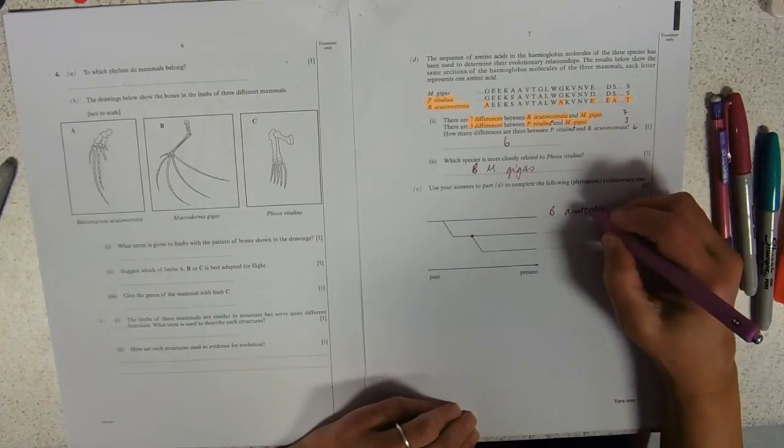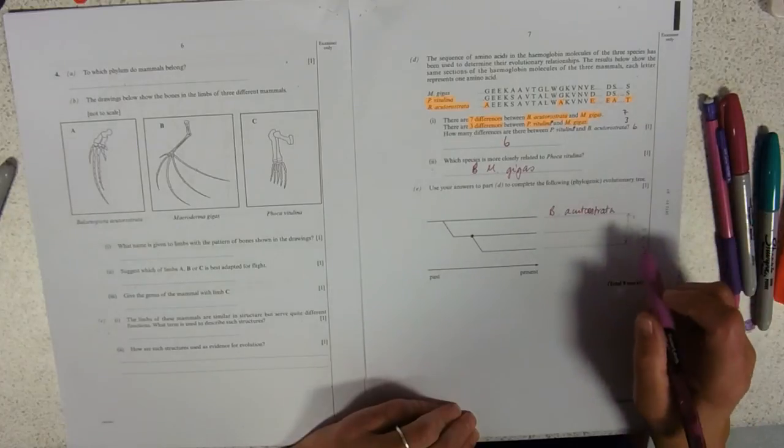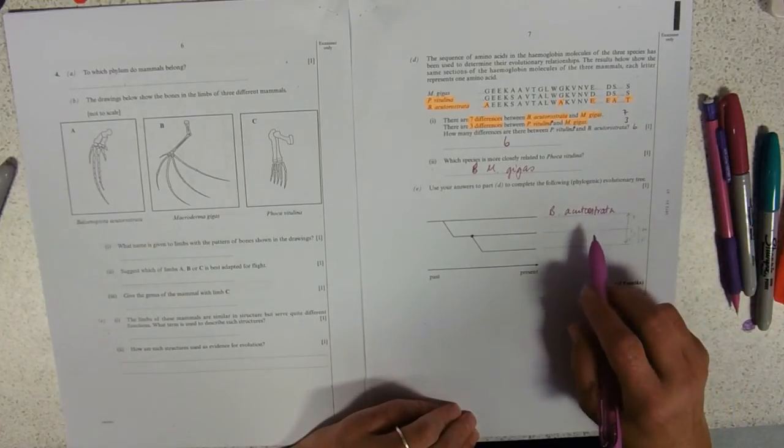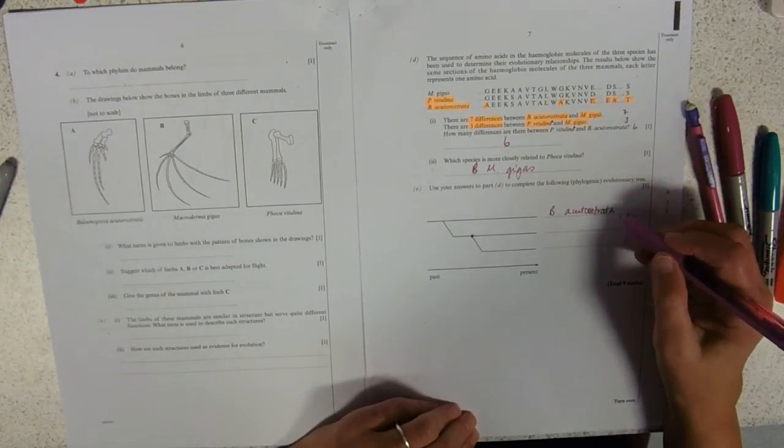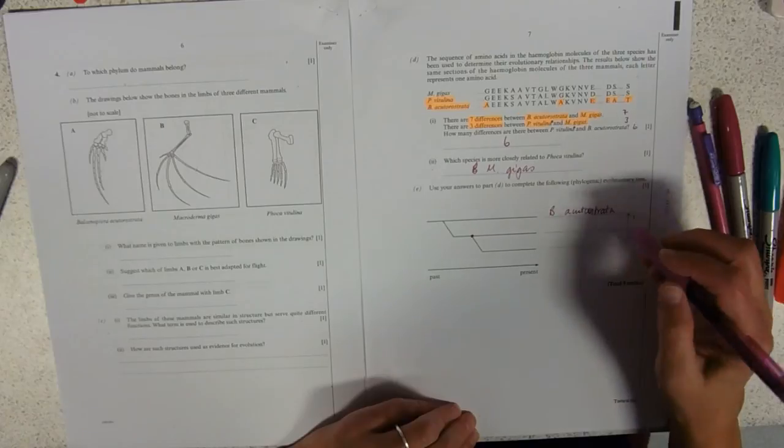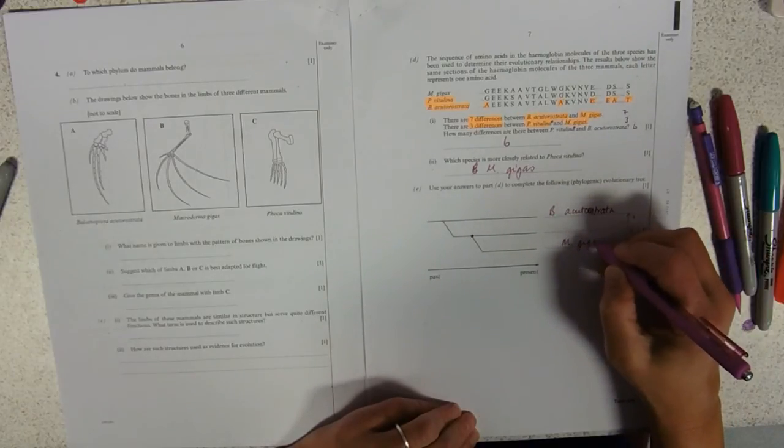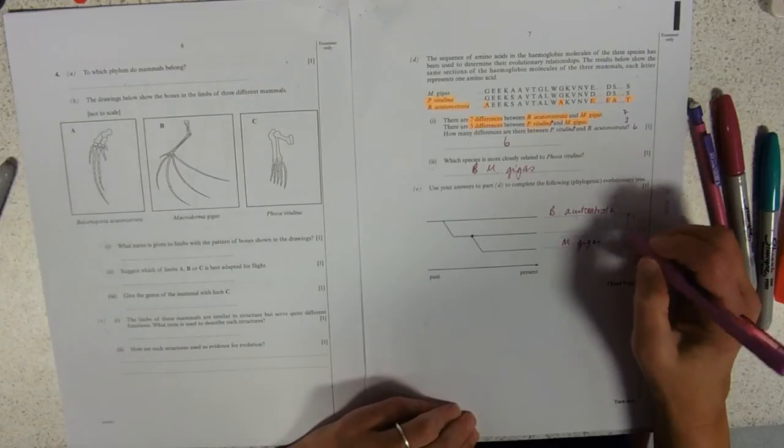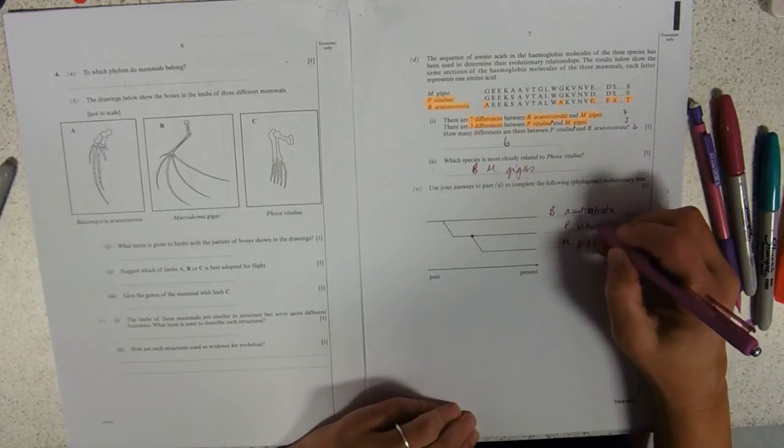Oh, I can't spell. Oh, I can't spell. Like you, Toro. Strata. Yeah, do be careful that you can actually copy the spellings down. Like I can't. So, the one that's furthest away from that is M. gigas. And in the middle, we've got P. vitulina. Yeah.